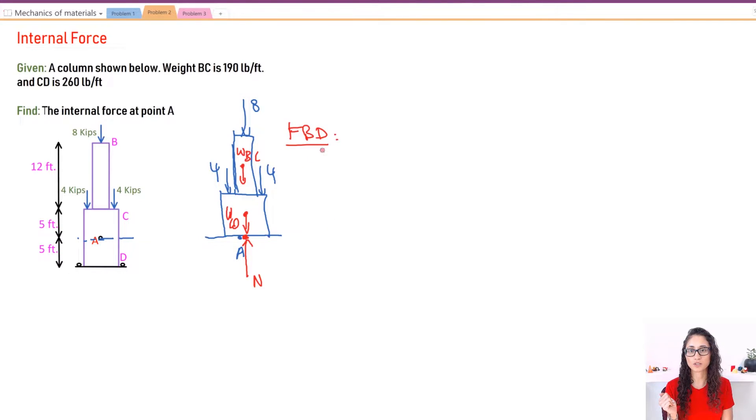Now there's one more thing before we can set up the equation for the summation of the forces on the y equals to zero. So here we were actually given the distributed load, 190 pounds per foot. So we need just pounds. So what we need to do is take this value and multiply it by the length.